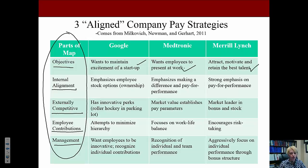In terms of internal alignment — which refers to aligning compensation with the importance of different jobs and skills within the organization — Google emphasizes employee stock options and ownership. Medtronic emphasizes making a difference and pay for performance, and Merrill Lynch places a strong emphasis on pay for performance.